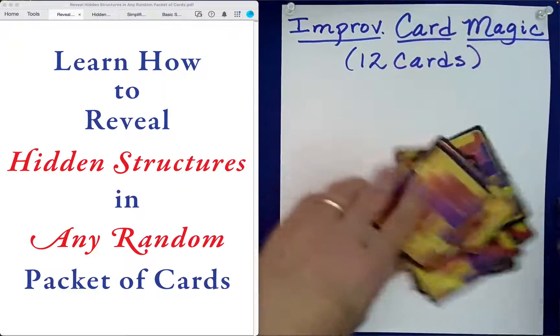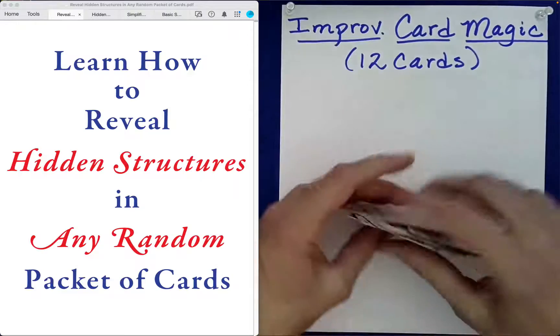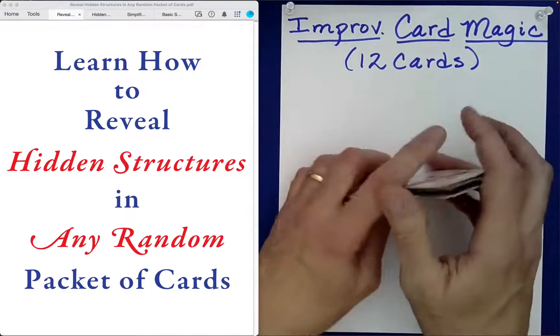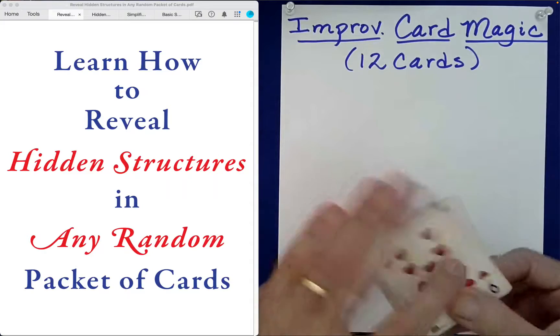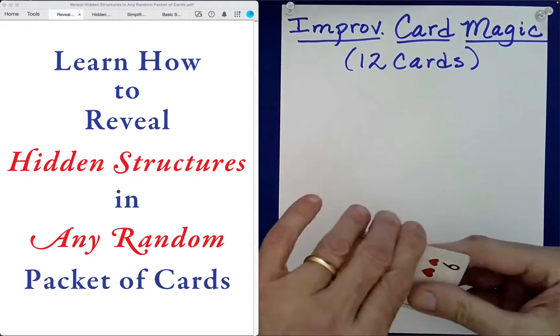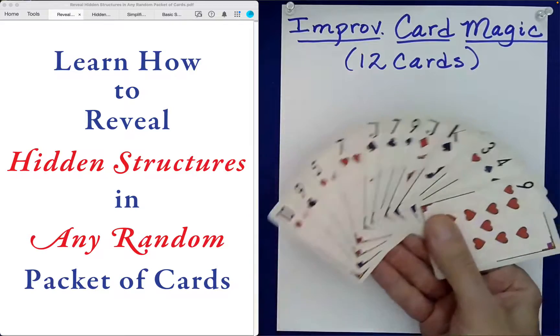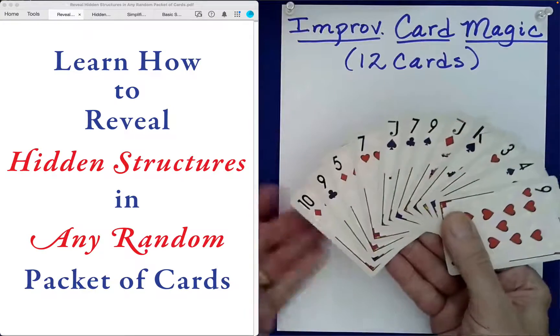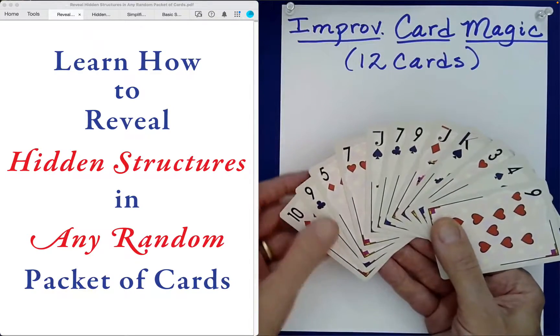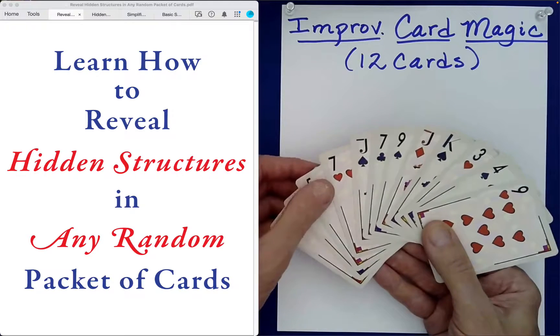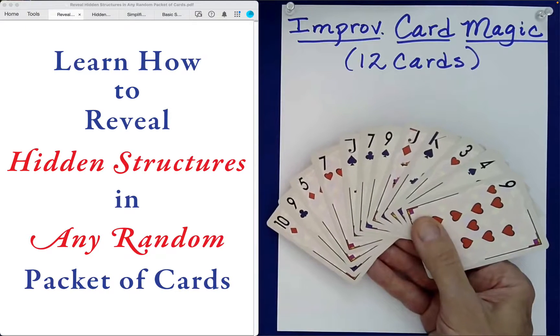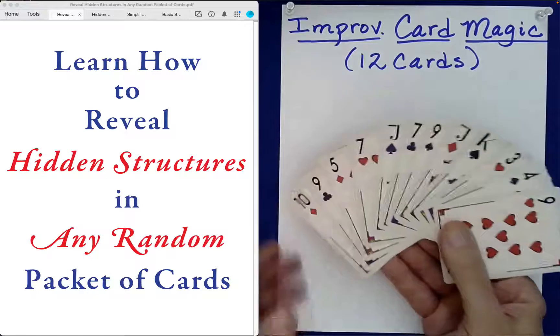Now what I'm going to do is show you the cards primarily to convince you that these are in no particular order. These are just random cards from a shuffled deck. Take a look at these cards here. Can you see all of them just fine? We should double check that we actually have 12. Does that look okay to you?